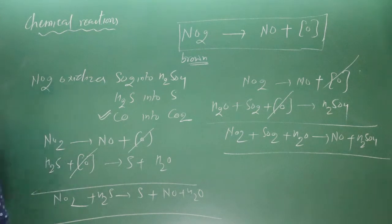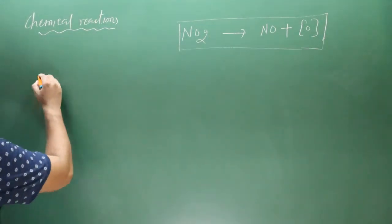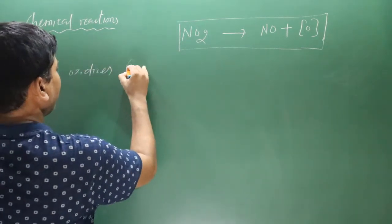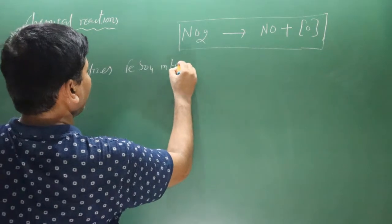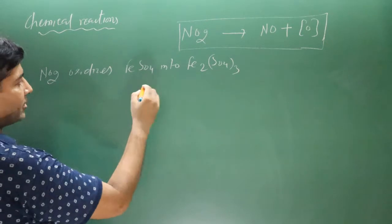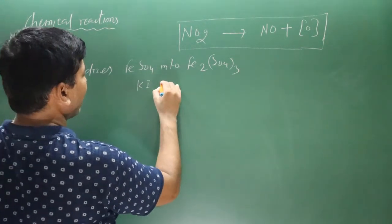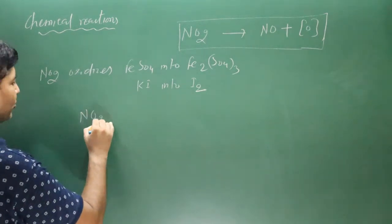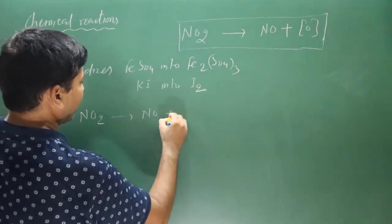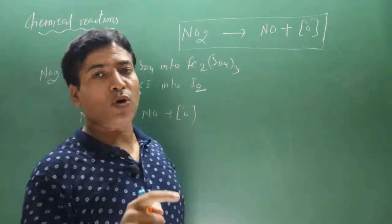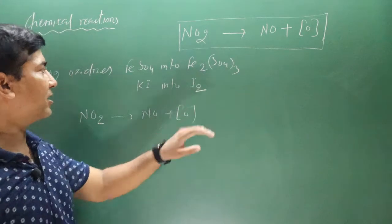NO2 oxidizes ferrous sulfate (FeSO4) into ferric sulfate [Fe2(SO4)3], and potassium iodide (KI) into iodine (I2). The FeSO4 reaction takes place in the presence of strong acid H2SO4.